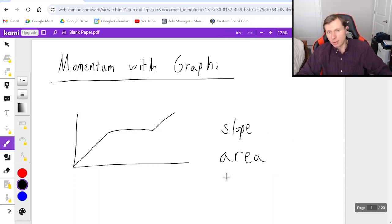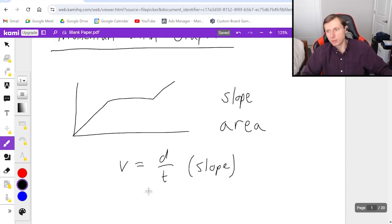For instance, I don't know if you remember this, but hopefully you do. Velocity is equal to distance over time. When you have division in your equation, that's when you find slope of the graph, and you're going to use area whenever it's multiplication.